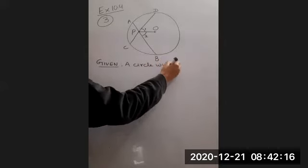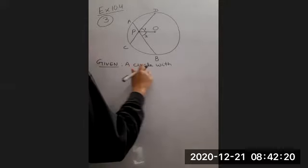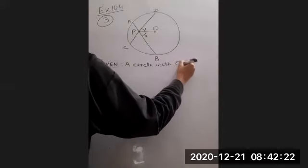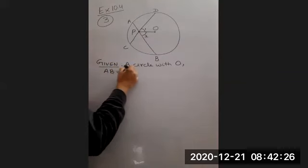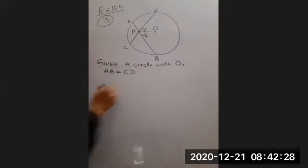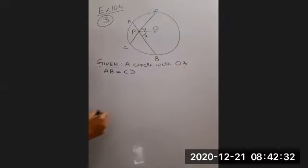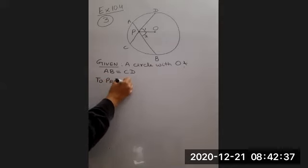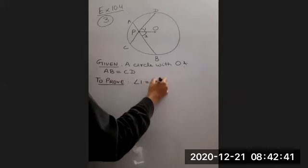We need to show that OP makes equal angles with the chords. That is angle 1 is equal to angle 2. So we are given a circle with center O, AB equal to CD. We need to prove that angle 1 is equal to angle 2.